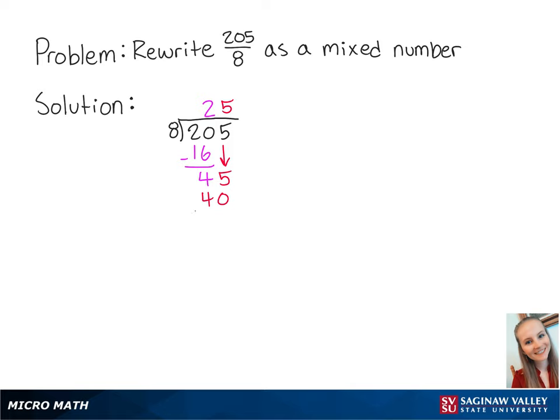8 times 5 is 40. We subtract 40 from 45, which is 5. So we have a remainder of 5.